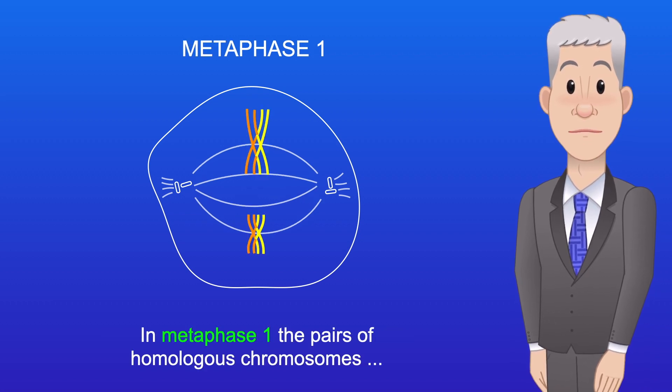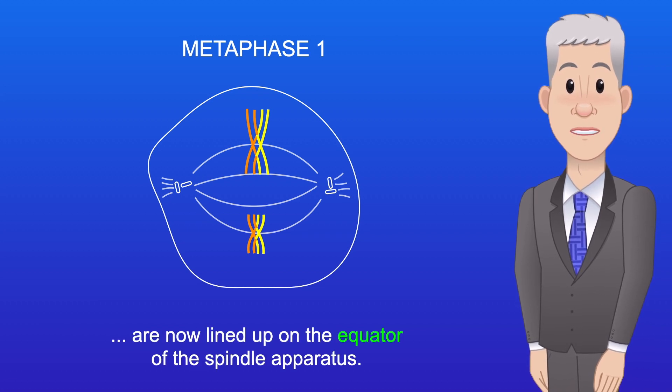In metaphase I, the pairs of homologous chromosomes are now lined up on the equator of the spindle apparatus.